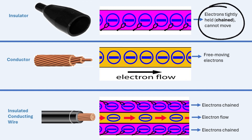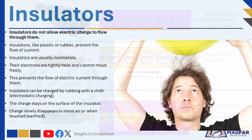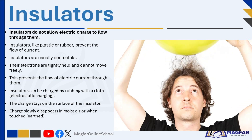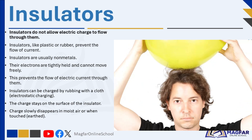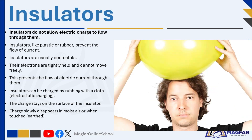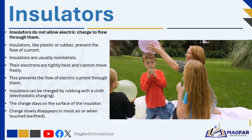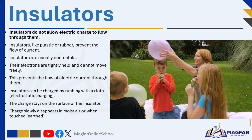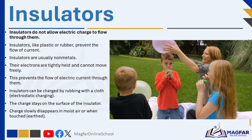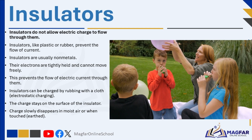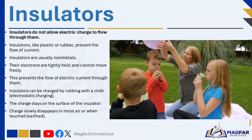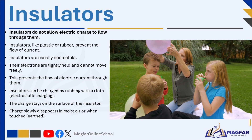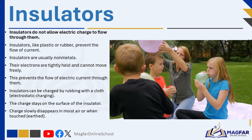However, an insulator can be charged electrostatically — for example, by rubbing it with a piece of cloth. In this case, the charge stays on the surface of the insulator. But the charge doesn't stay forever. In wet or moist weather, the insulator gradually loses its charge into the air. If you touch the insulator with your hand, the charge flows away quickly — this process is called earthing the charge.